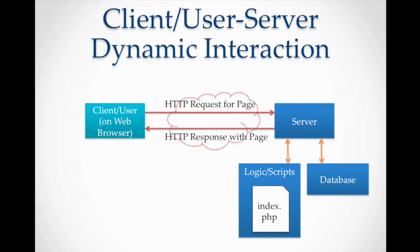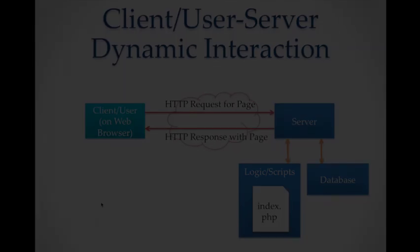A database engine is where we store data permanently — it's a permanent storage space where your passwords, first name, and last names are stored when you register for a new email address with Gmail.